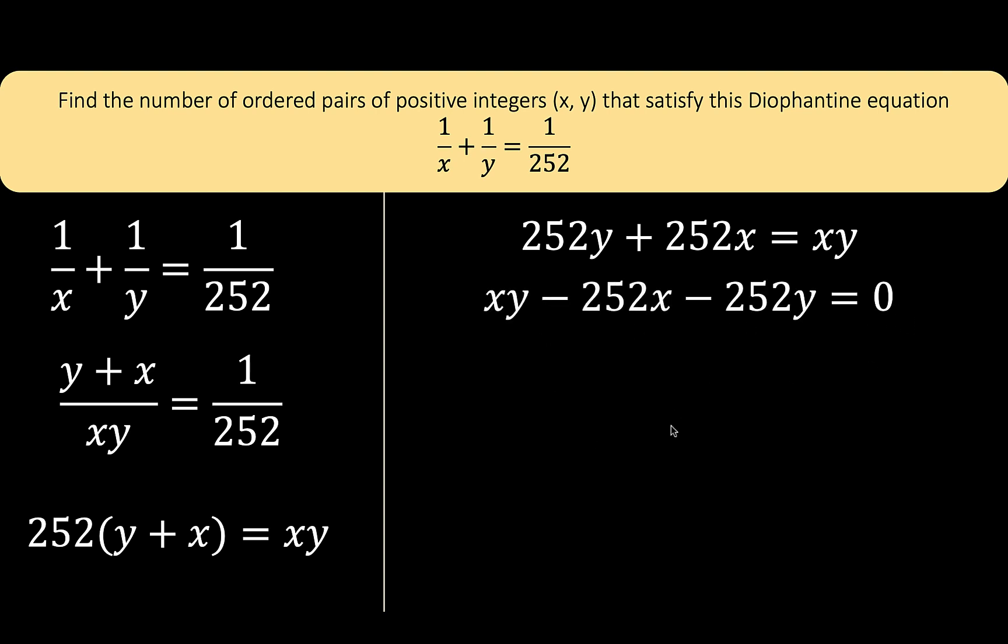Now what can we do with this equation? Notice that xy is common in the first two terms, but the third term is alone. So let's introduce a constant by adding 252 squared to both sides of the equation. The purpose is so that we can apply factoring by grouping. When I group together the first two terms and the last two terms, there's a common factor of xy. Factoring this out, we arrive at xy times the quantity y minus 252. For the last two terms, let's factor out negative 252, arriving at minus 252 times the quantity y minus 252.